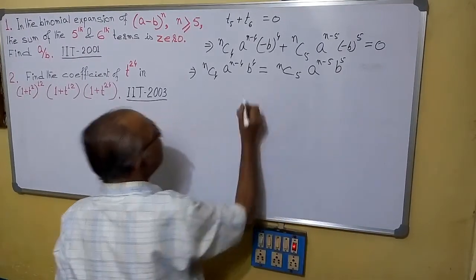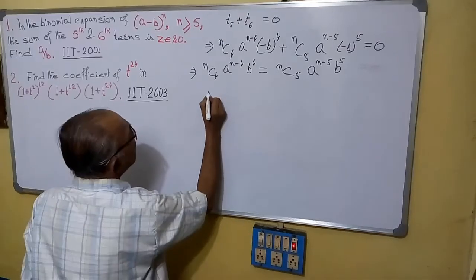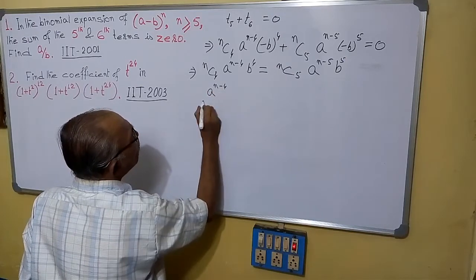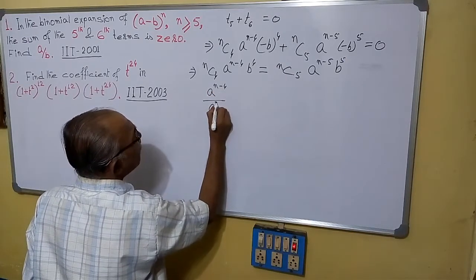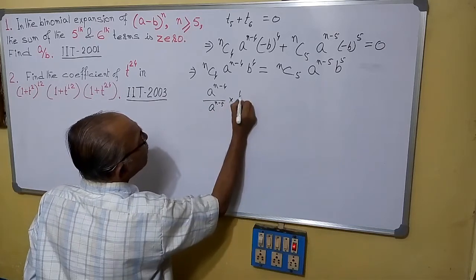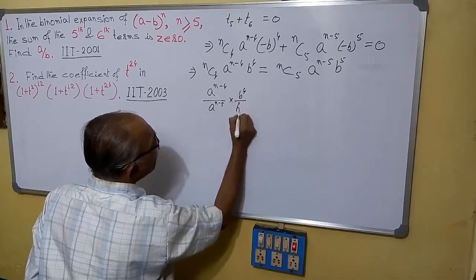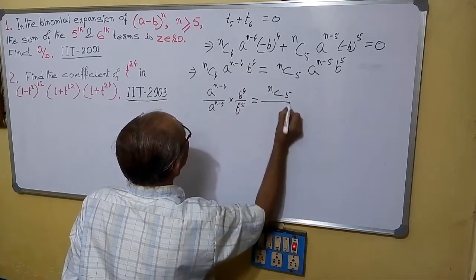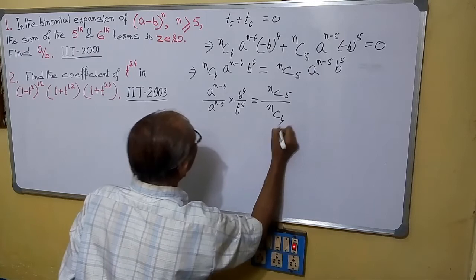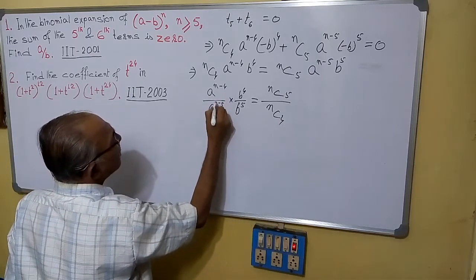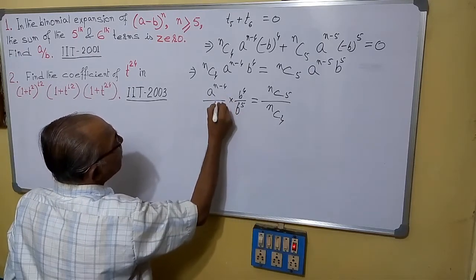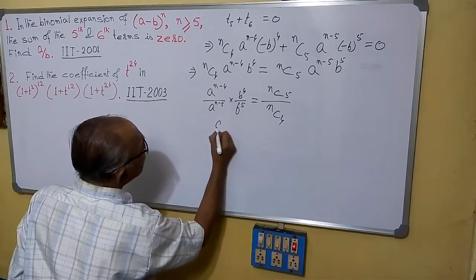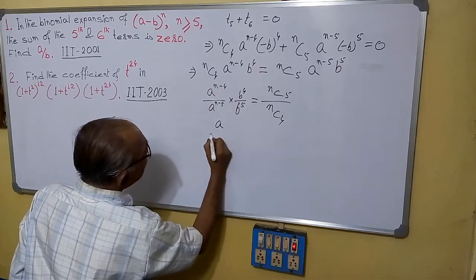Taking the second term to the other side, we get equality. Now we can write a^(n−4) by a^(n−5) into b^4 by b^5 equals nC5 by nC4. This simplifies: a^(n−4−(n−5)) = a^1 = a, and b^(4−5) = b^(−1) = 1/b. So a/b equals nC5 by nC4.